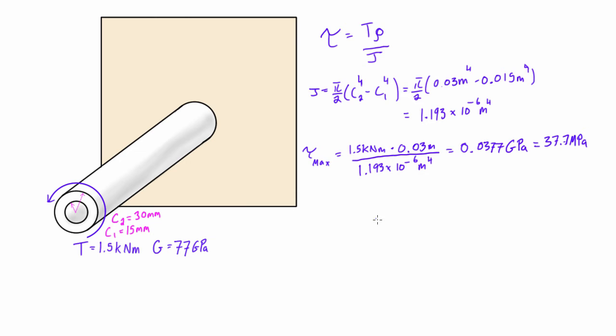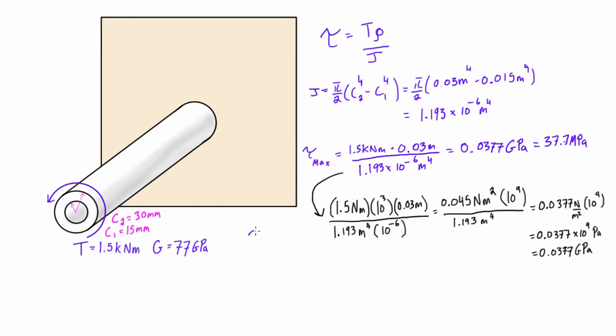Now if you're not comfortable making the jump from these units to gigapascals or you can't remember why that works, this is all the units and this is how we get to 0.0377 gigapascals. Alright, so that was our expression for τ_max.